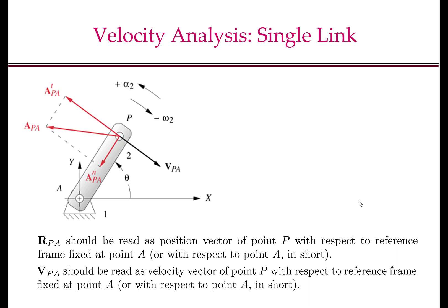Let us first look at a single link. The figure on the left shows a single link rotating about an axis passing through the pivot at A, and let P be the point of interest on the link. Let us first fix some notations. We will use R to denote the position, V to denote velocity, and A to denote acceleration. The bold font indicates that they are vectors. The vectors will have two subscripts. The first subscript denotes the point which we are interested in; the second subscript denotes the origin of the reference frame, or the point with respect to which we are describing the position, velocity, or acceleration of the point of interest.